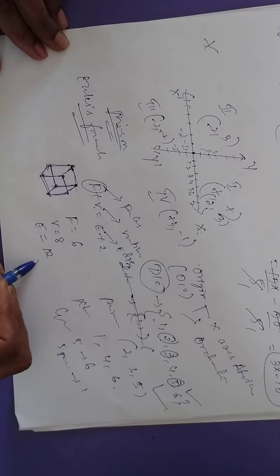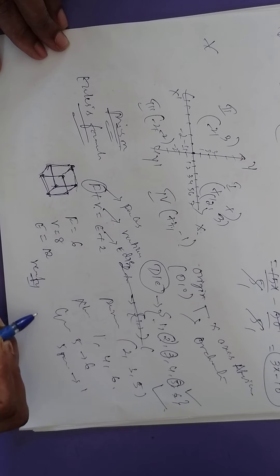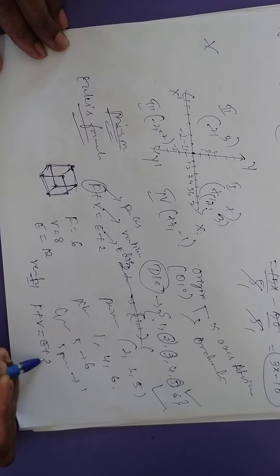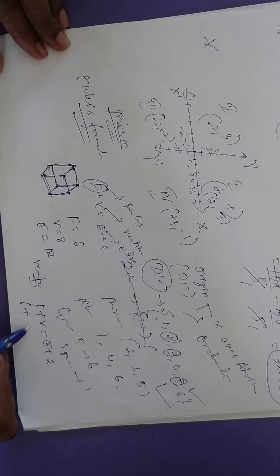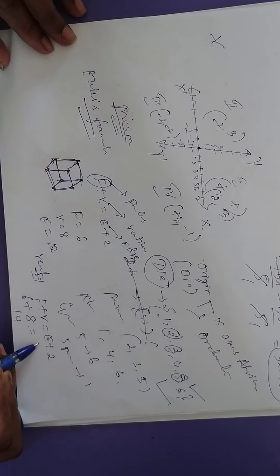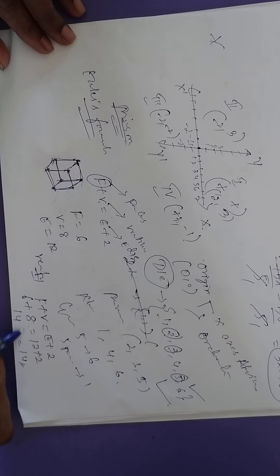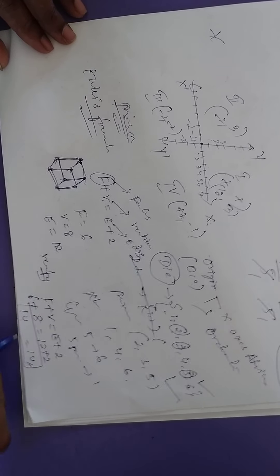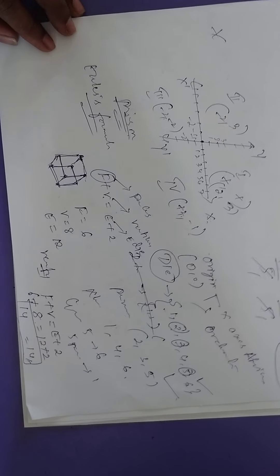How to verify Euler's formula: F plus V should equal E plus 2. F is 6, V is 8 — 6 plus 8 is 14. E is 12 — 12 plus 2 is also 14. So F plus V equals E plus 2 is verified.